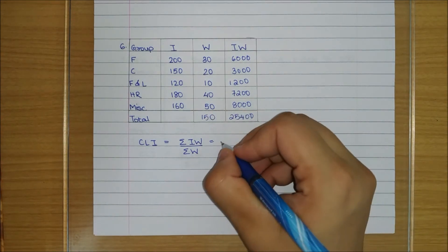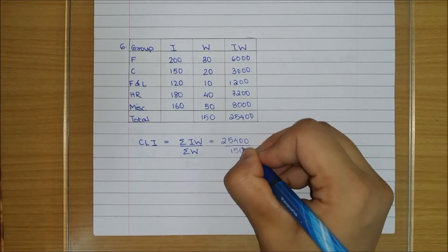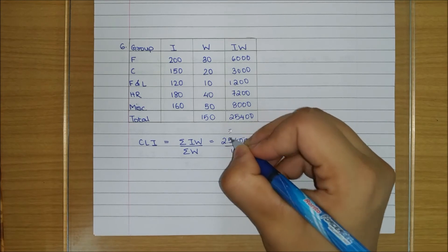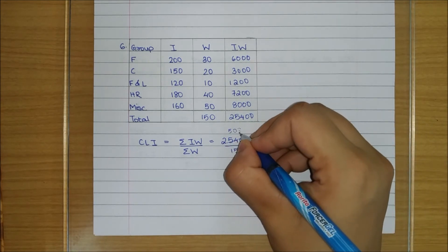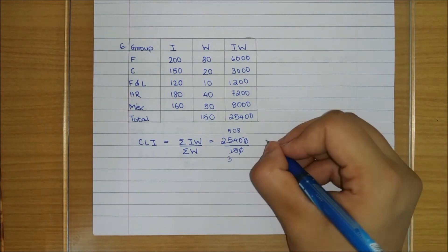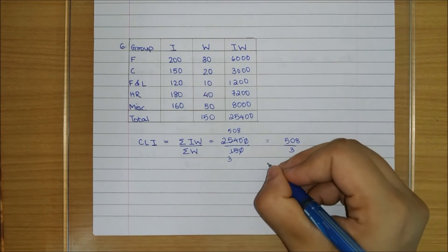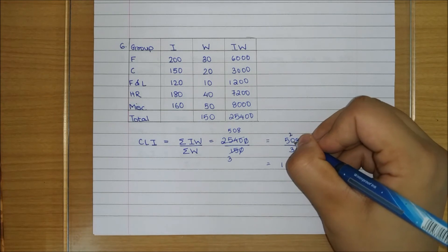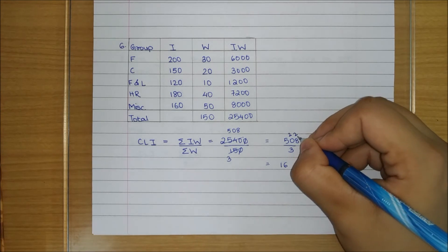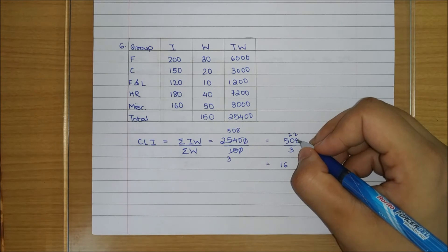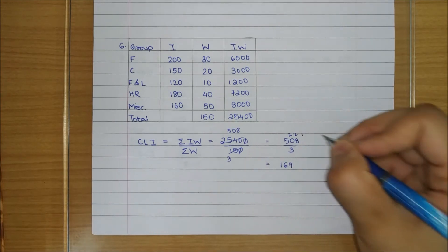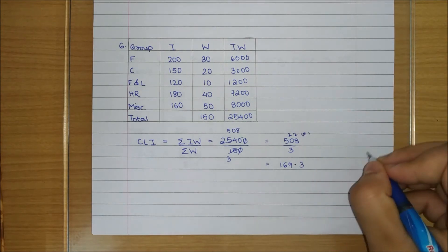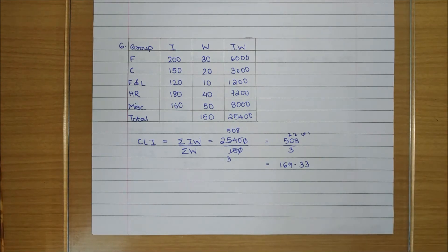Now we divide 25400 by 150. We can cancel and reduce by 5, getting 508 divided by 3. Doing this orally: 3 into 1 is not possible, carry 1; now 10, 3 threes are 9, remainder 1; 18 — 3 sixes are 18, carry 1; then decimal gives 10, 3 threes again. So the answer is 169.33.